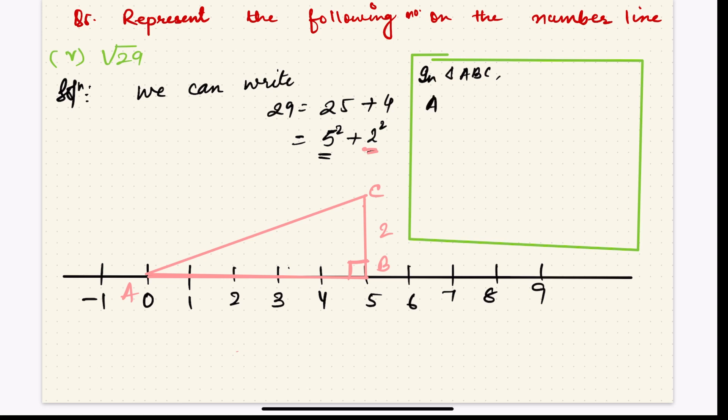Using Pythagorean theorem in triangle ABC, you can write down AC square is equal to AB square plus BC square. What is AB? AB is 5 units, right? 5 square plus BC is 2 square. 5 square is 25, 2 square is 4. And AC square will come this side and it will become root. 25 plus 4 is 29.